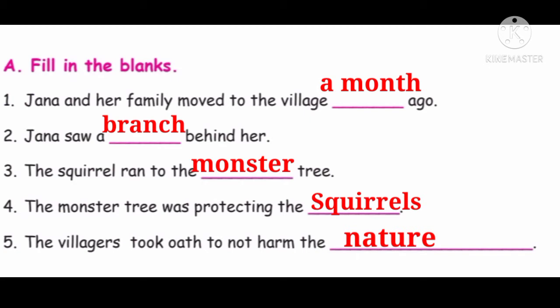Let's read all the answers. First: Janna and her family moved to the village a month ago. Second: Janna saw a branch behind her. Third: the squirrel ran to the monster tree. Fourth: the monster tree was protecting the squirrels. Fifth: the villagers took out to not harm the nature.